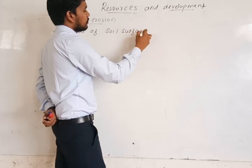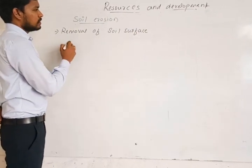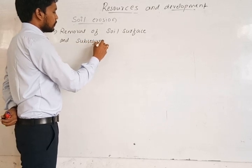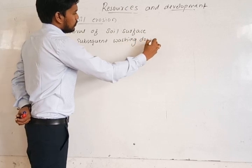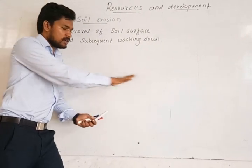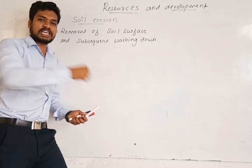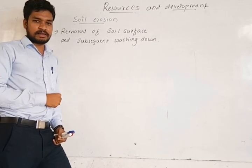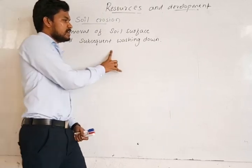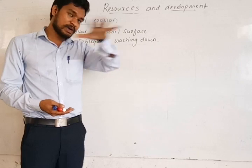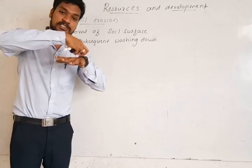The removal of the soil surface — by the work of water, wind and many other factors, with subsequent washing down — is called soil erosion. There are many factors which cause soil erosion.